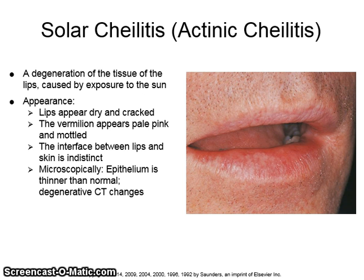Solar cheilitis, also known as actinic cheilitis, is a degeneration of the tissue on the lips caused by exposure to the sun. The lips appear dry and cracked. The vermilion appears pale pink and mottled, and the interface between the lips and the skin is indistinct. Microscopically, the epithelium is thinner than normal, and there are degenerative connective tissue changes present.